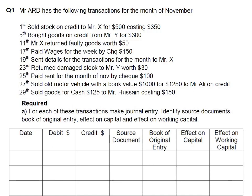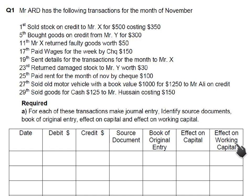Before going through this question, I would suggest you first go through all the basic concepts such as double entry, debit and credit, source documents, and books of original entry. We need to identify the source document, the book of prime entry (also known as book of original entry), the effect on capital, and the effect on working capital. Working capital is current assets minus current liabilities. A PDF link is available in the video description.